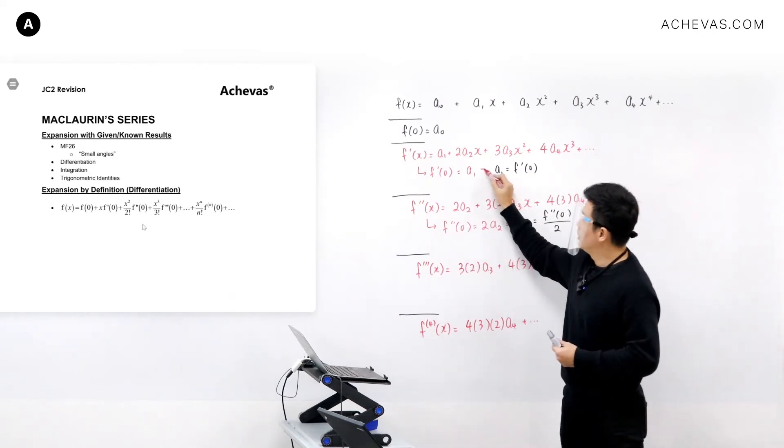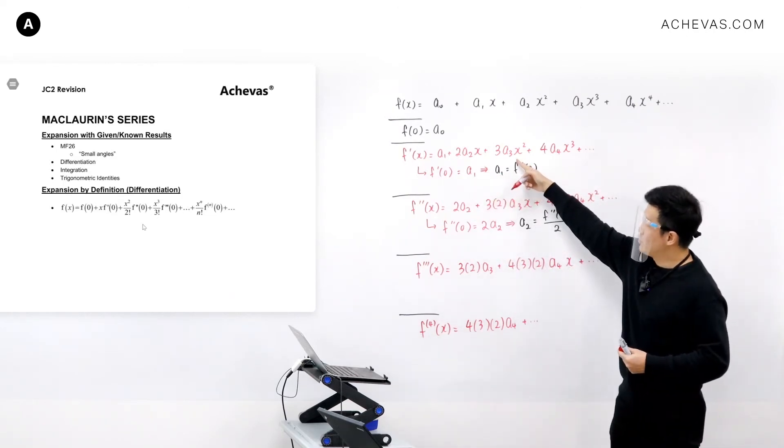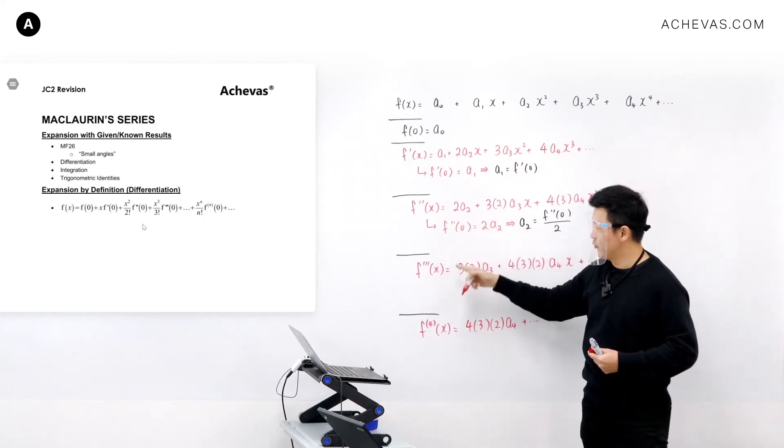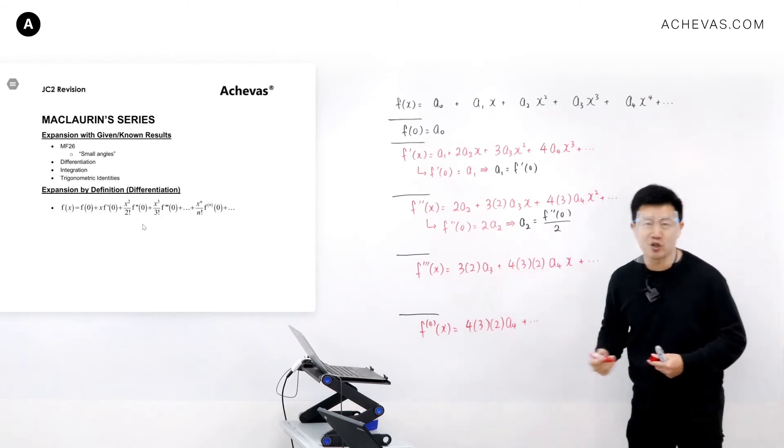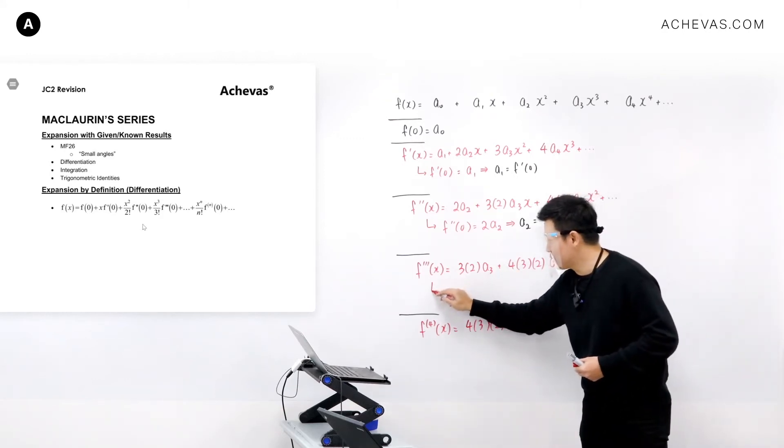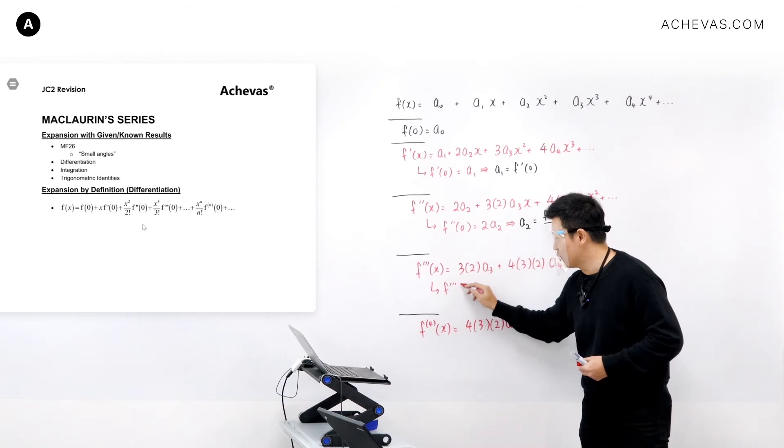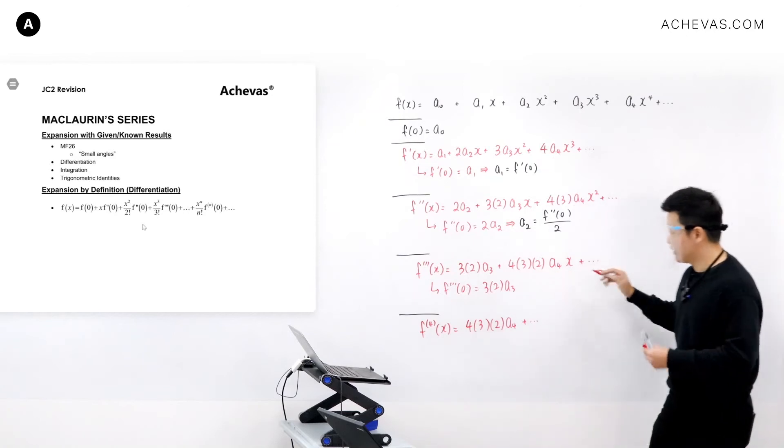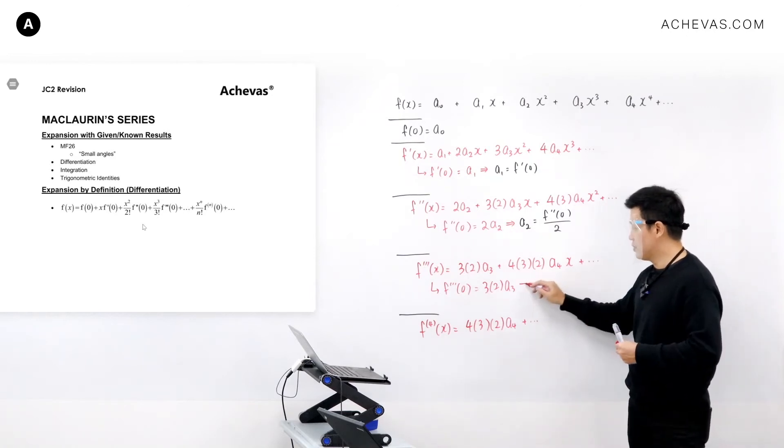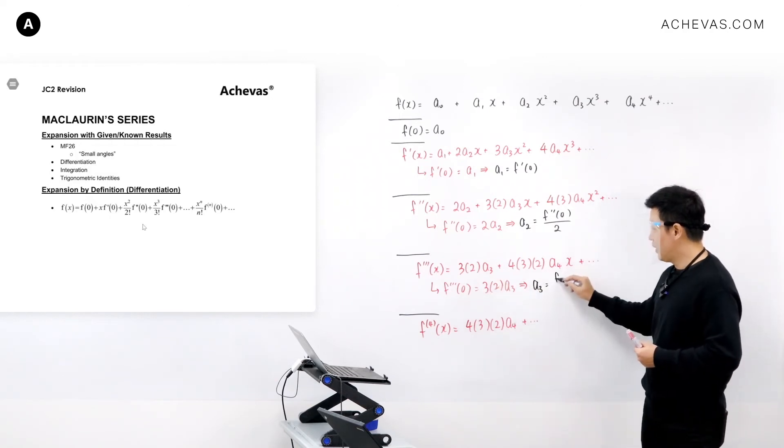To find a3, I'm going to take this and differentiate it one more time. The a2 term will disappear, and I'm left with an a3 term independent of x. I repeat the process by letting x equal 0. This gives me 3 times 2 times a3, which means a3 equals f'''(0) divided by 3 times 2.